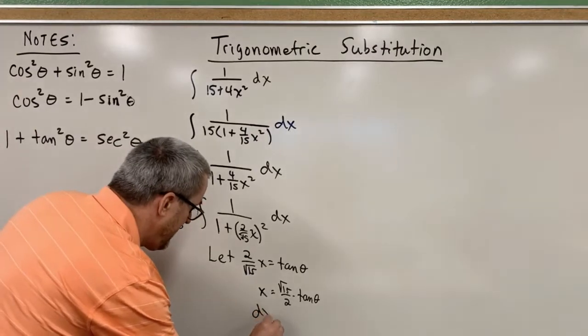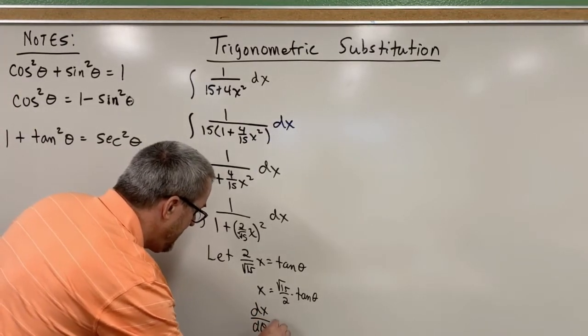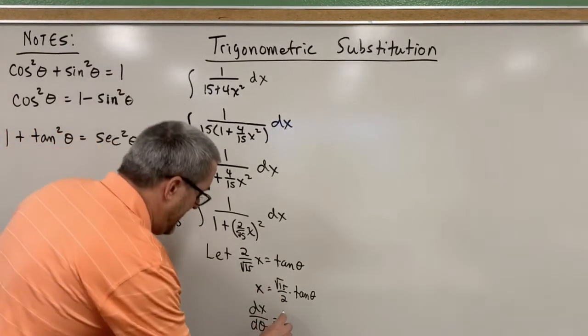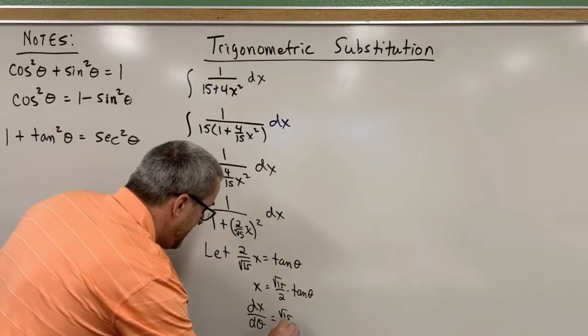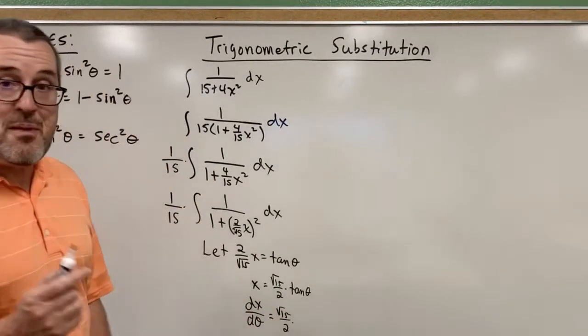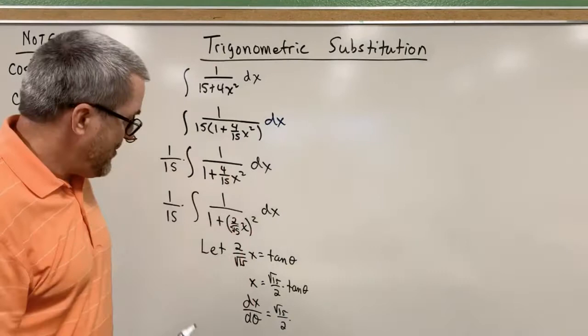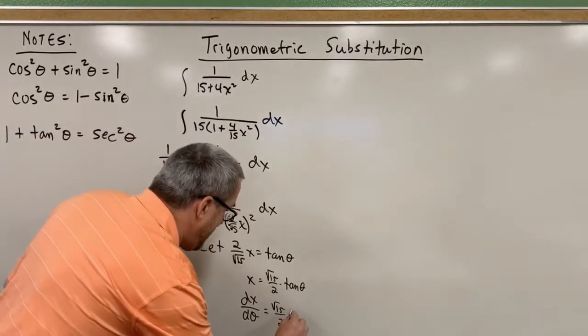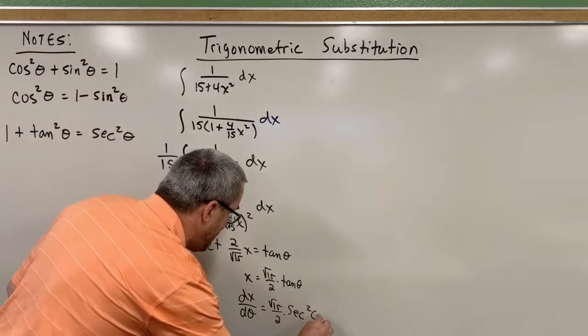If we take the derivative with respect to theta. Now, the derivative of tangent. You may have to remember this, dust off some old Calc 1 memories, but the derivative of tangent is secant squared of theta.